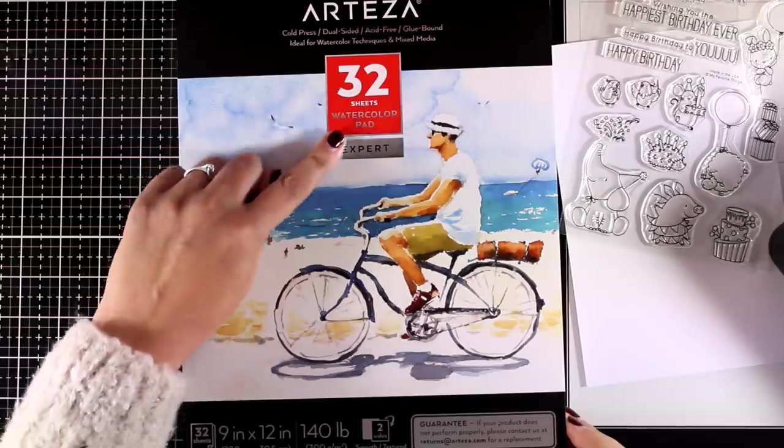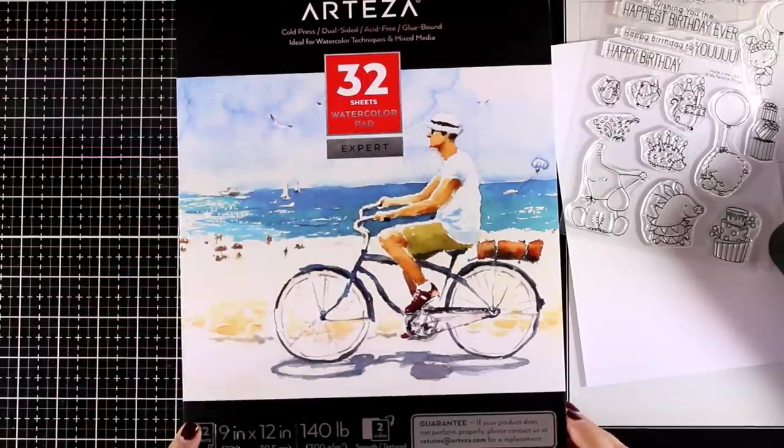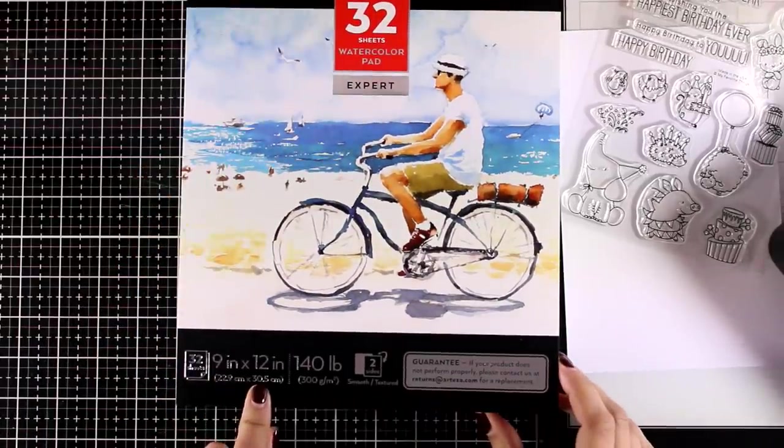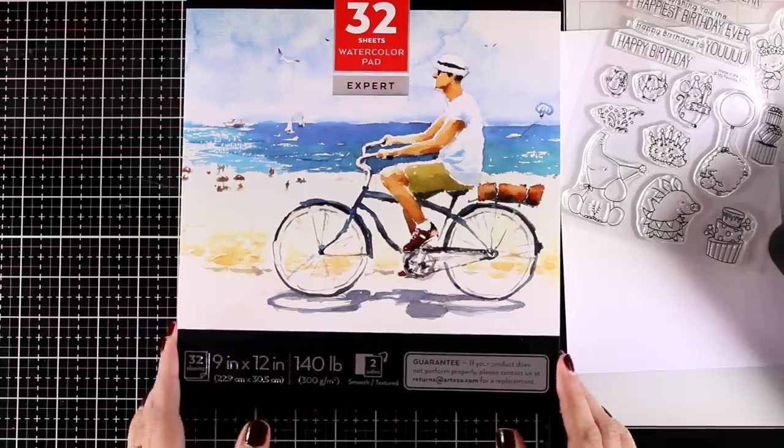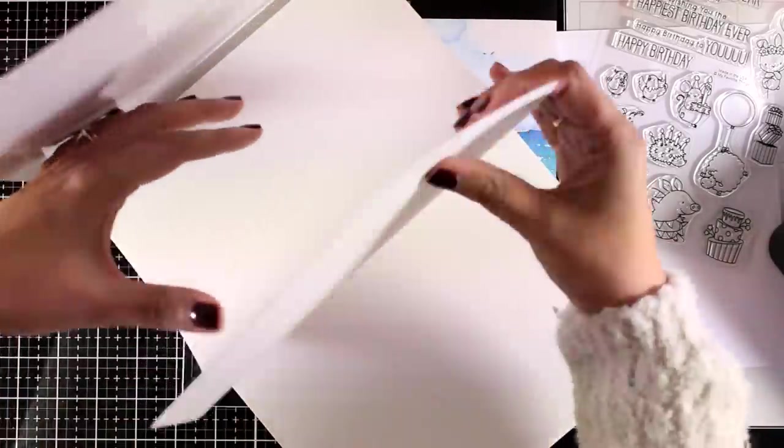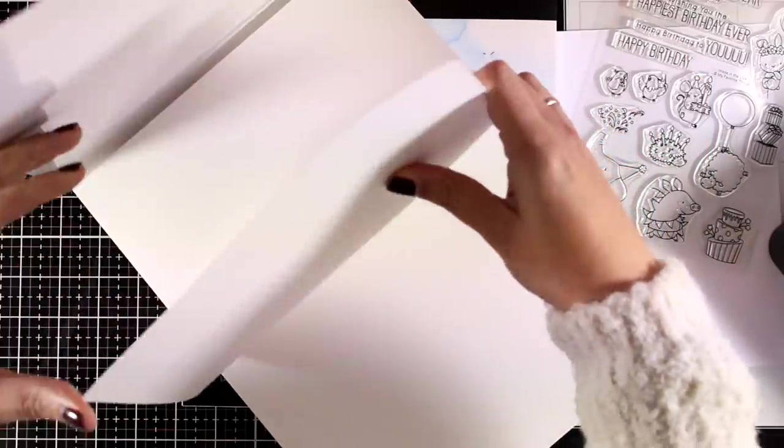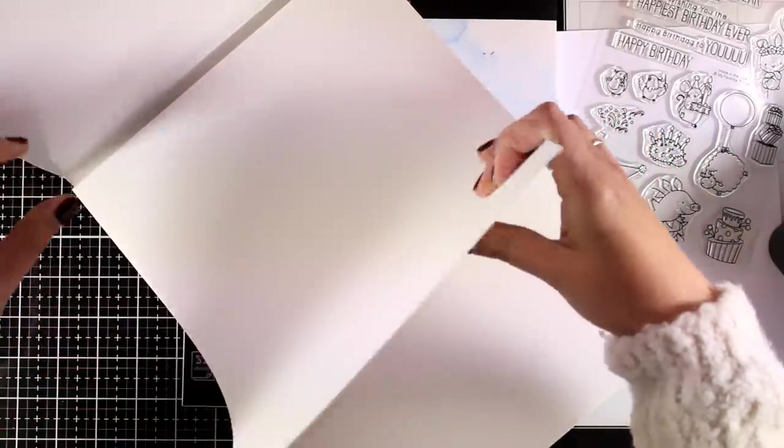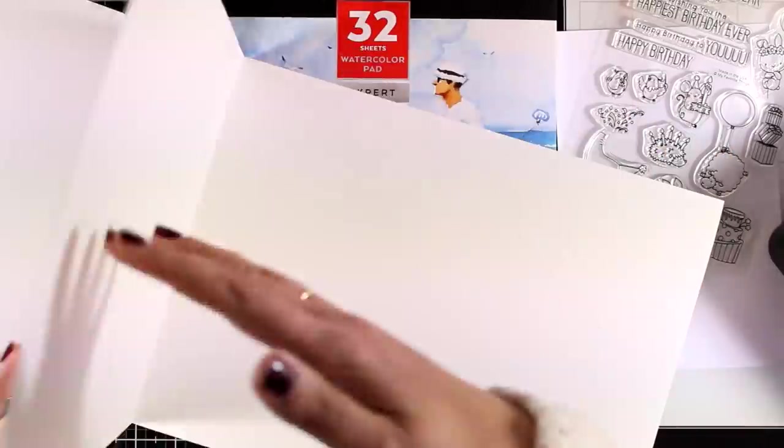It has a guarantee here that if it doesn't perform well with your mediums, you can let them know. I'm using the expert quality. It is 9 by 12 inches and it's 140 pounds, which is nice and thick. I am planning to use some of these pages to create my disc bound journals, but I will do that on another video.